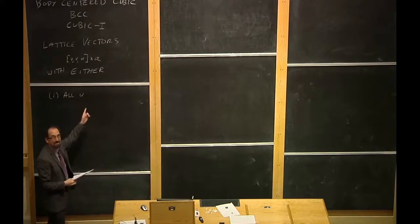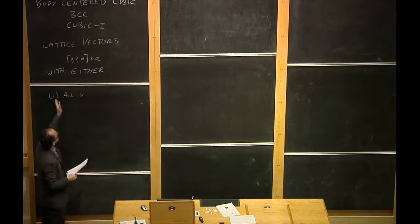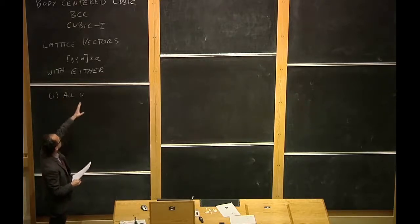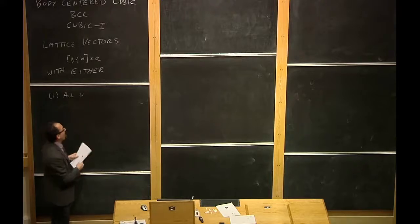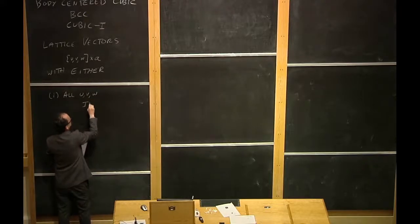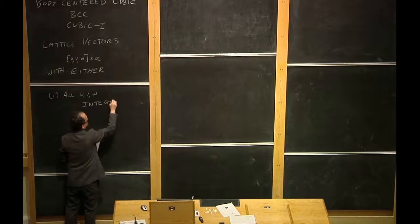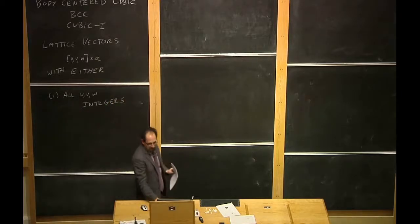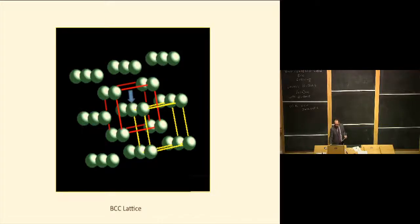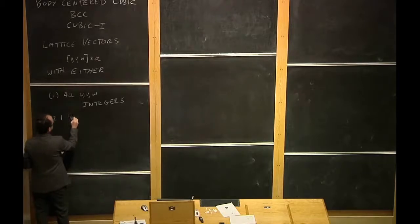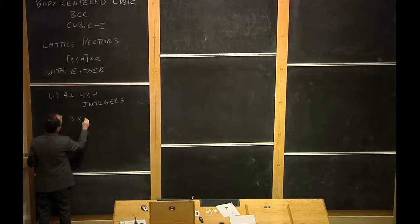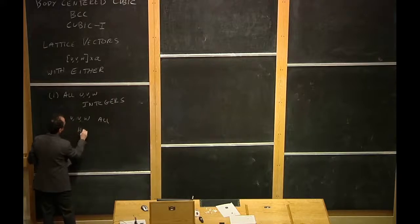We're going to write down the lattice vectors as (u, v, w) times a, with either all of the u, v, w integers. The integer case corresponds to the corners of the conventional unit cell — for instance, (1,0,0), (1,1,0), and so forth. The other possibility is u, v, w all half-odd integers.